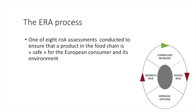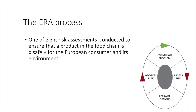The ERA process is one of eight risk assessments performed to ensure that a product in the food chain is safe for the European consumer and its environment. It's a very logical process with common features with environmental and social impact assessment, but the object of the assessment is different — here we are assessing a product, not a project or investment or activity. There are many other methodological differences between impact assessment and ERA.